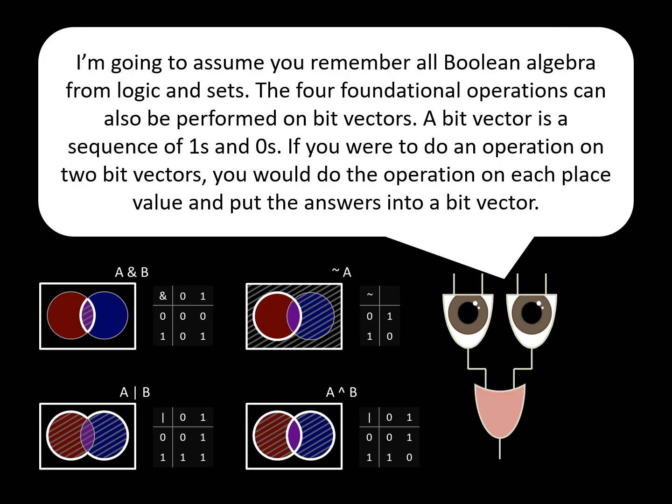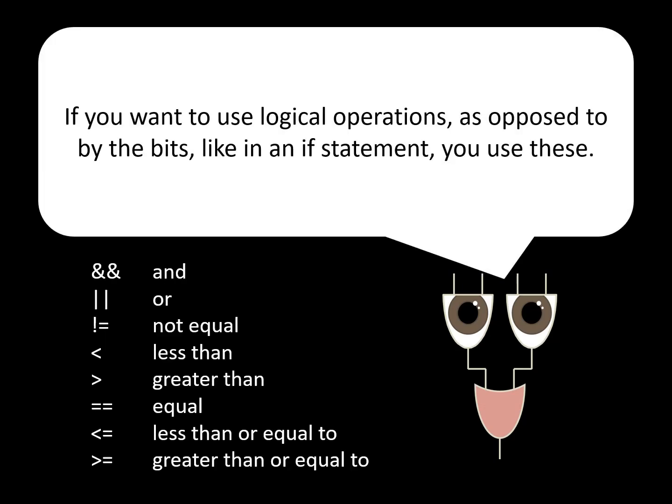I am going to assume you remember all Boolean algebra from logic and sets. The four foundational operations can also be performed on bit vectors. A bit vector is the sequence of 1s and 0s. If you were to do an operation on two bit vectors, you would do the operation on each place value and put the answers into a bit vector. If you want to use logical operations as opposed to bitwise, like in an if statement, you use these.